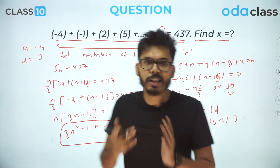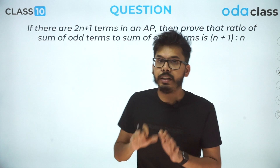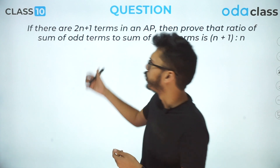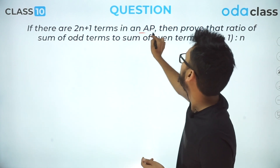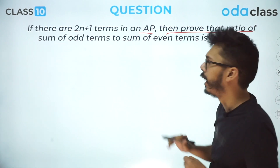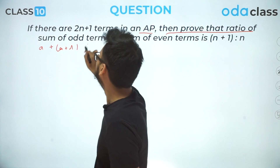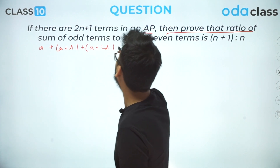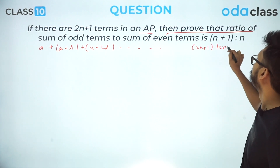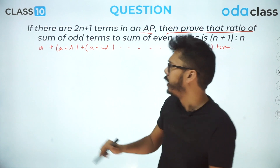Moving on to the next problem, which is a bit more difficult — it involves two series derived from one arithmetic progression. The question: if there are (2n+1) terms in an AP, prove that the ratio of the sum of odd-positioned terms to the sum of even-positioned terms is (n+1)/n. We assume the AP is a, a+d, a+2d, … with (2n+1) total terms.